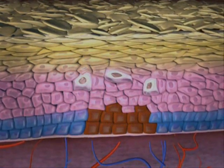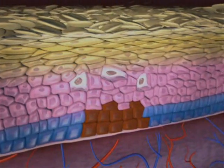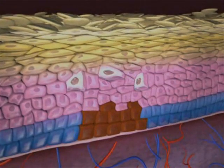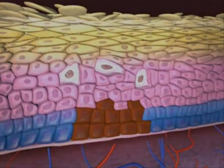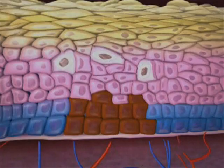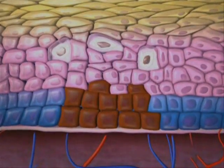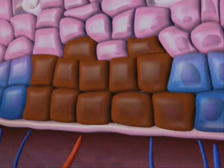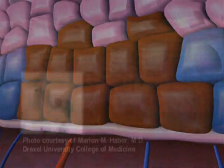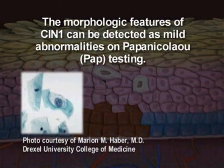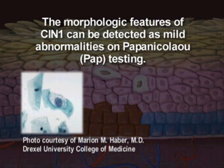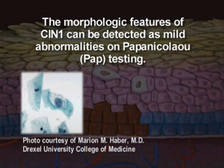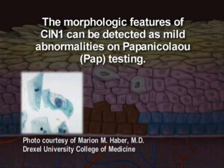Low-grade lesions are characterized by mild morphologic changes to the epithelium. Lesion grading is based on the level of epithelial abnormalities. In CIN1, abnormal cells are concentrated in the basal third of the cervical epithelium. PAP testing can detect low-grade squamous epithelial lesions as mild abnormalities, but cannot predict their potential for malignant evolution.